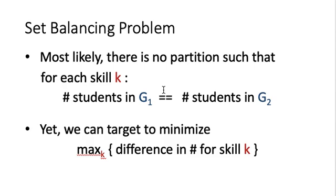Most likely, there is no partition such that for each Skill K, the number of students in the first group is exactly the same as in the second group. Simply, when the number of students with a certain skill is odd, there is no way to do the partitioning perfectly. On the other hand, we can still do something that looks good: we can try to minimize the maximum difference in the number of students of a certain skill after partitioning. We want to minimize the maximum of these differences.